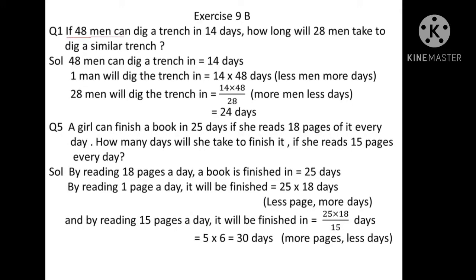Question number 1: If 48 men can dig a trench in 14 days, how long will 28 men take to dig a similar trench? Since this is inverse variation, we multiply: 1 man will dig the trench in 14 multiplied by 48 days. For 28 men, it is 14 multiplied by 48, divided by 28, which gives 24 days.